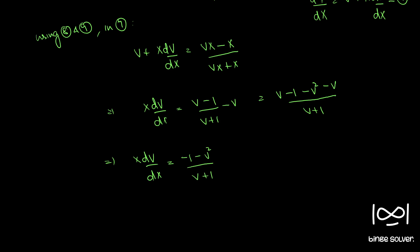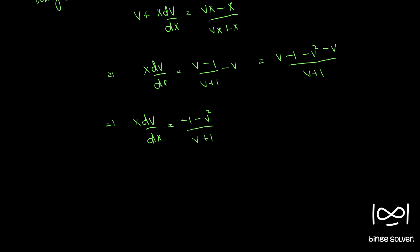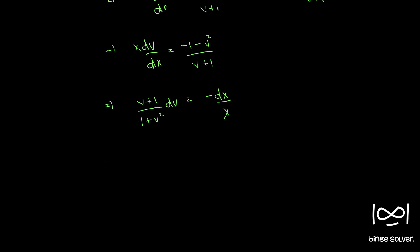This is a form where we can use the method of separation of variables. We bring all terms of v to one side and x to the other. Taking minus 1 outside, we get (v plus 1) by (1 plus v squared) dv equal to minus dx by X. We can split this into two terms: 1 by (1 plus v squared) plus v by (1 plus v squared), times dv, equal to minus dx by X.